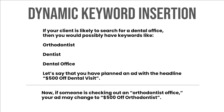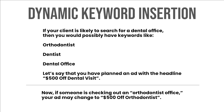Dynamic keyword insertion. This feature helps you in specific targeting. For example, combine ad groups and keyword lists in a manner that mirrors multiple searched queries. If your client is likely to search for a dental office, then you would possibly have keywords like orthodontist, dentist, dental office. If you have planned an ad with the headline '$500 off dental visit,' and someone is checking out an orthodontist office, your ad may change to '$500 off orthodontist.' Dynamic keyword insertion aims to make your ads more relevant for users to encourage them to click on your Google ad.